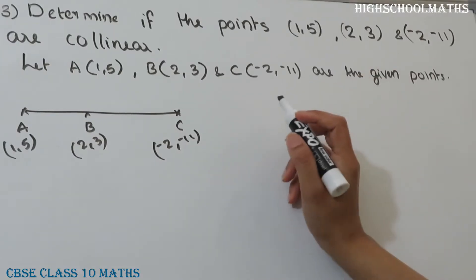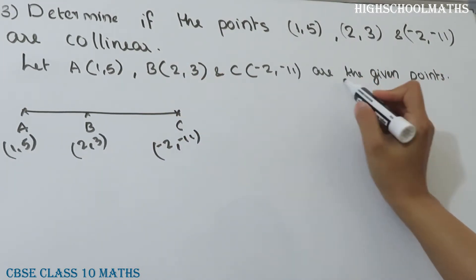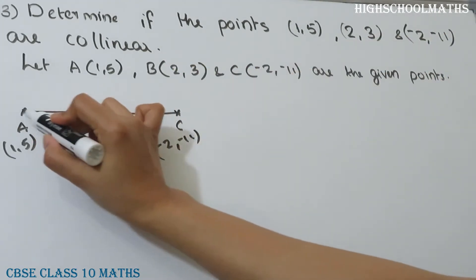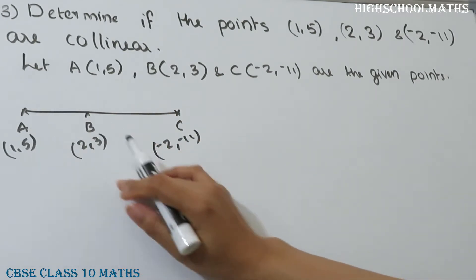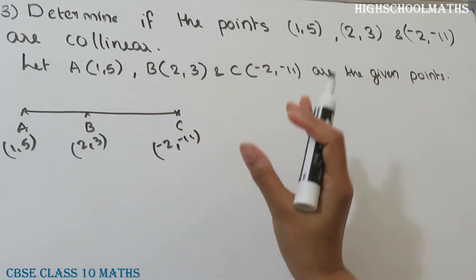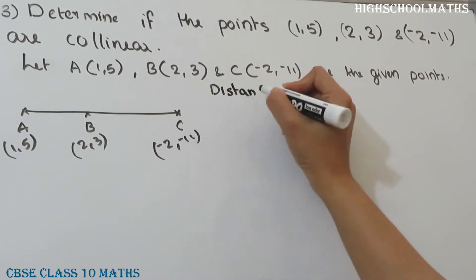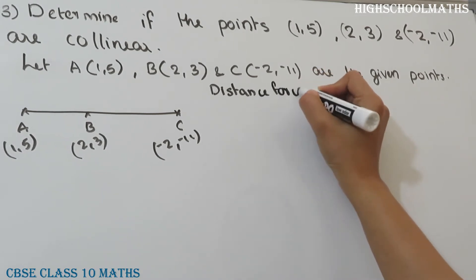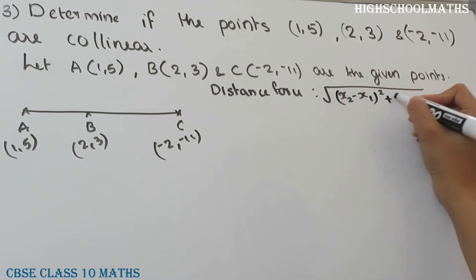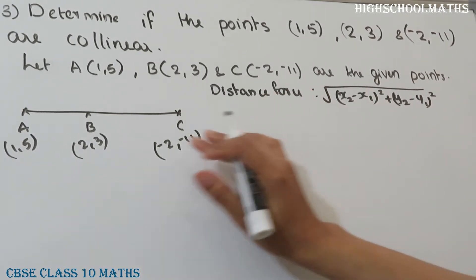Now let's start. Let A = (1,5), B = (2,3), and C = (-2,-11) be the given points. We call the points A, B, C. If we have a straight line A, B, C, then we will find the distances AB, BC, and AC using the distance formula.